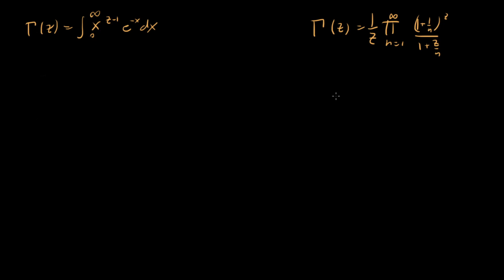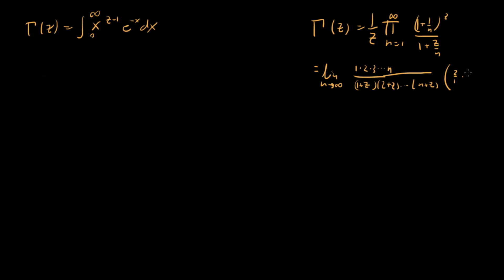The first thing I'm going to do is recall that this product definition of the gamma function came from this limit definition. We said initially that gamma of z was equal to the limit as n goes to infinity of 1 times 2 times 3 all the way up to n, divided by (1+z)(2+z) all the way up to (n+z), times (2/1)(3/2) all the way up to (n+1)/n, the whole thing raised to the z.